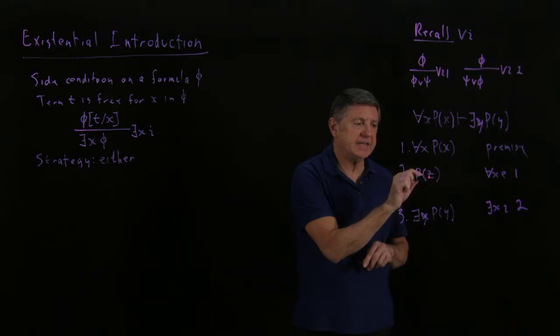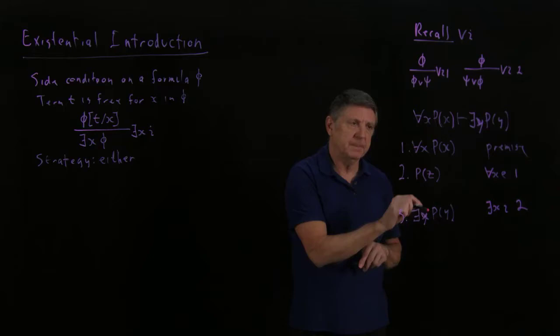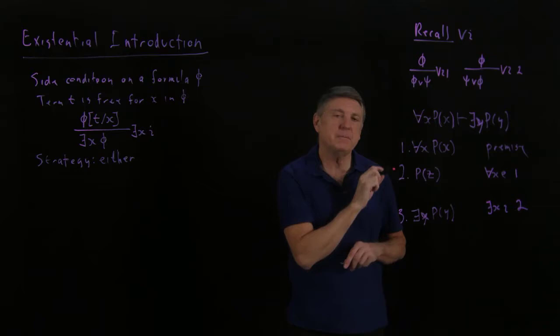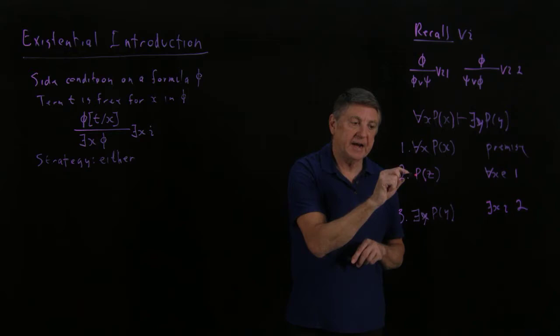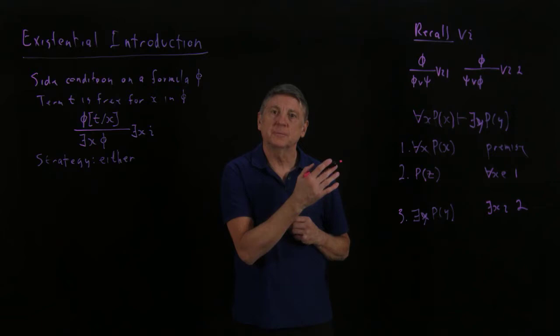And if that variable is free in the goal formula, and it's free in the lines that are above, that makes it a really good choice. Because I could reason that if I could get to this point, I could get to this point, and I can get to this point from this point.